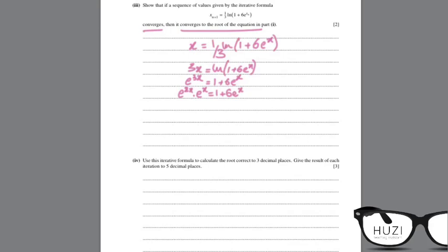We break e 3x into e to power 2x times e to power x equals to 1 plus 6 e x. We take e x on the other side. This becomes e to power 2x. 1 upon e to power x is e to power minus x. And 6 e x upon e x is 6. And this is the equation given to us in the first part.